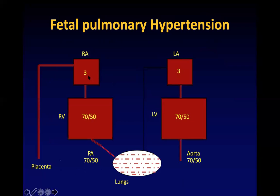In utero, the right-sided pressures are almost exactly the same as the left-sided pressures — you can see right atrial, left atrial, right ventricular, left ventricular pressures. The pulmonary artery pressures are also high because the lung is filled with fluid. If the lung is filled with fluid, obviously the pulmonary pressures will be higher because normally only 8 to 10 percent of blood will go to the lungs. That blood goes to the lungs only for lung growth, not for gas exchange.